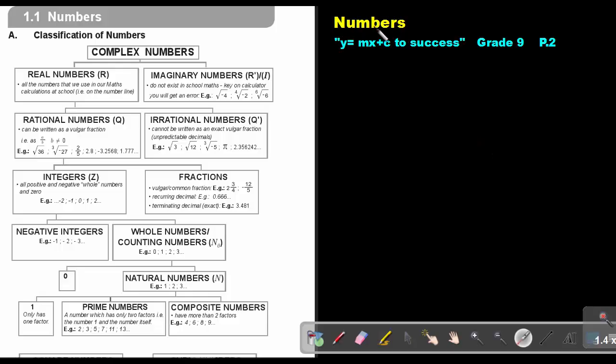Part 1: Numbers. You will find this on page 2 in the Namibia Mathematics Grade 9 textbook, Y equals MX plus C to success. Let's first look at the classification of numbers. Complex numbers can be divided into two groups: real numbers and imaginary numbers, non-real numbers.